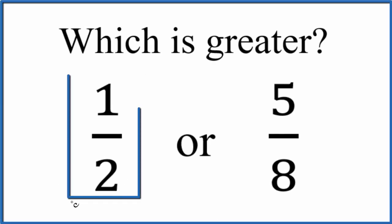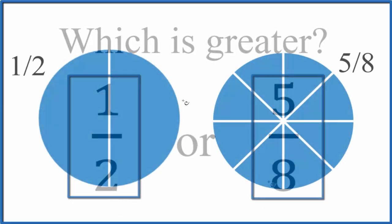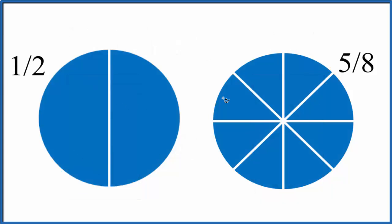So which is larger, 1 half or 5 eighths? So we have two circles here. This one's divided into two pieces. Each piece is 1 half.